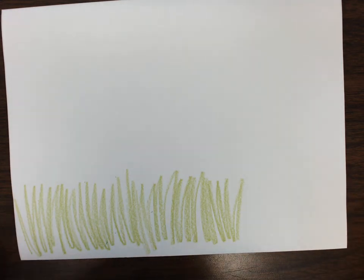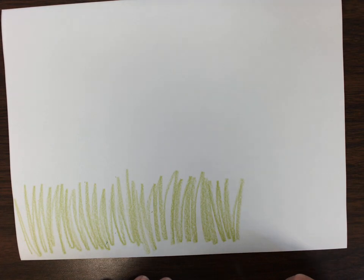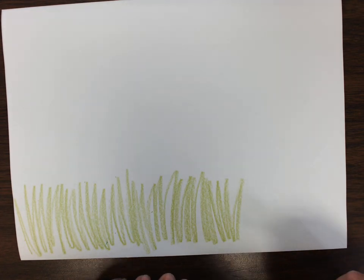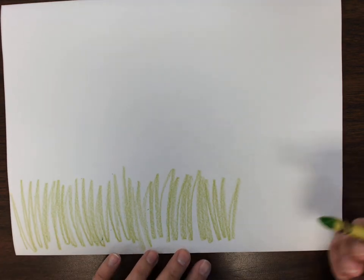We are talking about value in art class today, which is lights and darks. So today we are going to create a little caterpillar climbing through the grass with lights and darks.